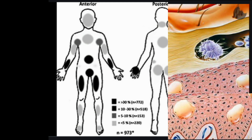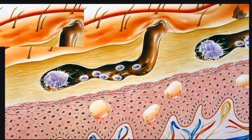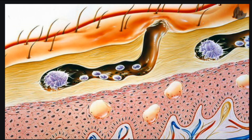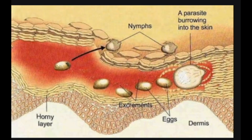What causes scabies? Scabies is the result of an infestation of tiny eight-legged mites. These bugs are so small you can't see them on your skin, but you can certainly see their effects. The mites burrow into the top layer of your skin to live and feed. Female mites lay eggs, and your skin reacts to the mites and their waste, developing a red, itchy rash.